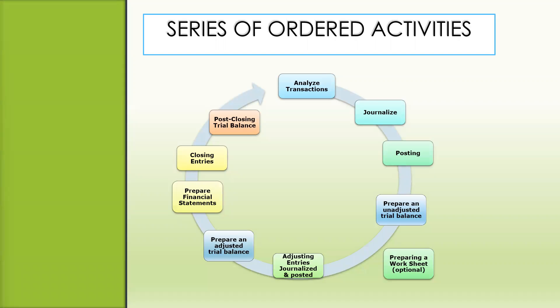The accounting cycle begins with analyzing and journalizing transactions, and it ends with the post-closing trial balance. This series of ordered activities helps to ensure both accuracy and conformity to accounting standards and practices.